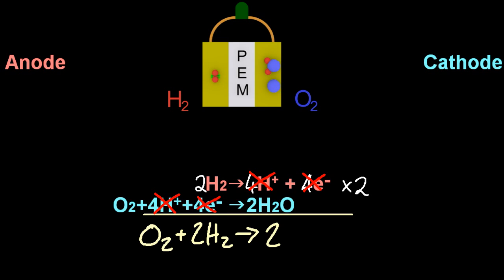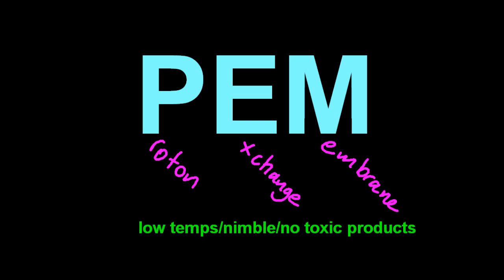Well how benign is that? So where are these super fuel cells? Well part of the problem is the proton exchange membrane and the catalysts are also used. On the good side, they work at low temperatures, they're nimble, which means you can ramp production up and down easily. And there are no toxic byproducts.